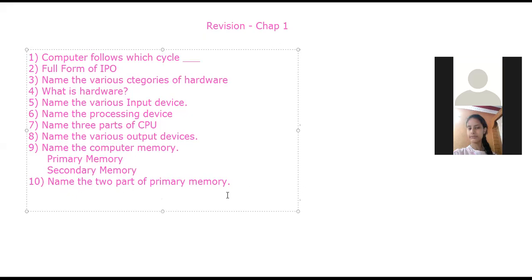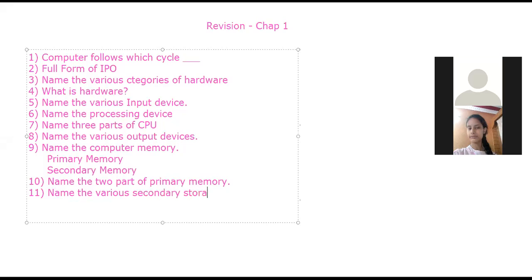Name the various secondary storage devices: hard disk, CD, DVD, pen drive, Blu-ray disc, memory card. What is the full form of CD? Compact Disc. Spell it out — Compact Disc.